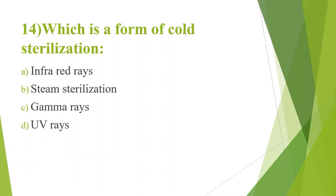14th question: Which is a form of cold sterilization? Option A, Infrared rays; Option B, Steam sterilization; Option C, Gamma rays; Option D, UV rays. Answer is Option C, Gamma rays. Sterilization by ionizing radiation — that is X-rays and gamma rays — is known as cold sterilization. It is a low-temperature sterilization as the temperature will not increase significantly.